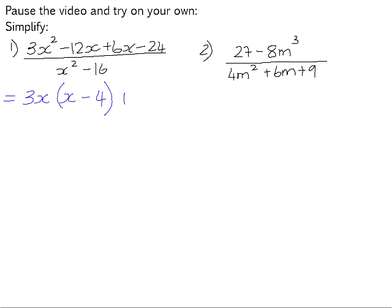If we group 6x minus 24, we have 6 that is common and that leaves us with x minus 4. x squared minus 16 is the difference of squares. It factors into x plus 4, x minus 4.